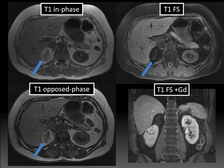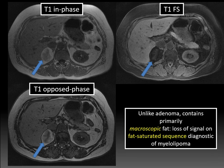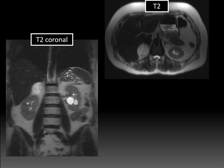On the T1 fat-saturated post-gadolinium image, the mass is only slightly enhancing — the fat signal areas are not enhancing — which is typical for myelolipoma. Only the soft tissue components enhance. Note also that it's well-circumscribed, unlike a liposarcoma, and it's separate from the right kidney — it's not an angiomyolipoma. Unlike adenoma, myelolipomas have primarily macroscopic fat, meaning they'll lose signal on the fat-saturated sequence, which is diagnostic of myelolipoma. You can think of macroscopic fat as fat you can see on CT — you can put an ROI on it and get negative 30 to negative 90 Hounsfield units. Contrast that with adenoma, which has microscopic intracytoplasmic fat that loses signal on the T1 opposed-phase image. Even though MRI is very specific for myelolipoma, CT with visible macroscopic fat may be more straightforward, as you can see it evident on a single image.